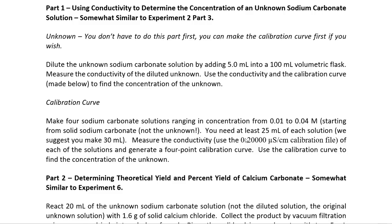You're going to measure the conductivity of each solution using the 0 to 20,000 microsiemens per centimeter high-range calibration file. Then you'll generate a four-point calibration curve with conductivity and concentration, find the equation of the calibration curve using y = mx + b, and use the conductivity of the unknown to find its concentration. That is essentially what you are doing in part one.